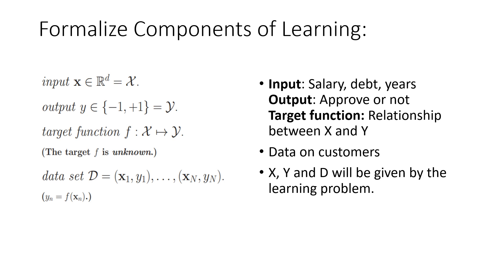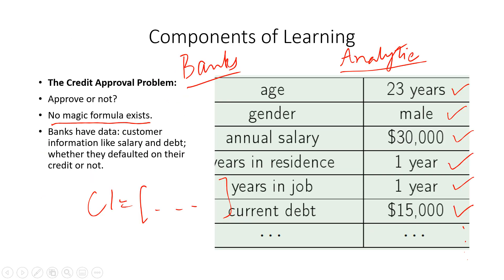I'm again looking at this problem. I just wanted to remind you that I will formalize everything based on the components of learning that we discussed here for the credit approval problem, because this is easier to visualize and easier to understand. So essentially we'll try to come up with some mathematical formulation such that we have a relationship between input and output, and we will have some standard way of denoting each element of the problem.